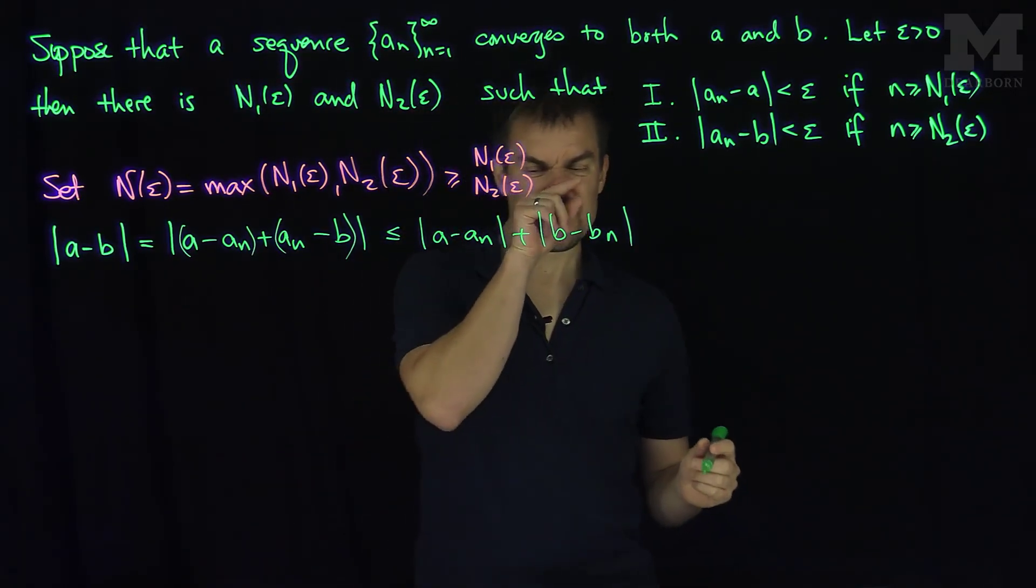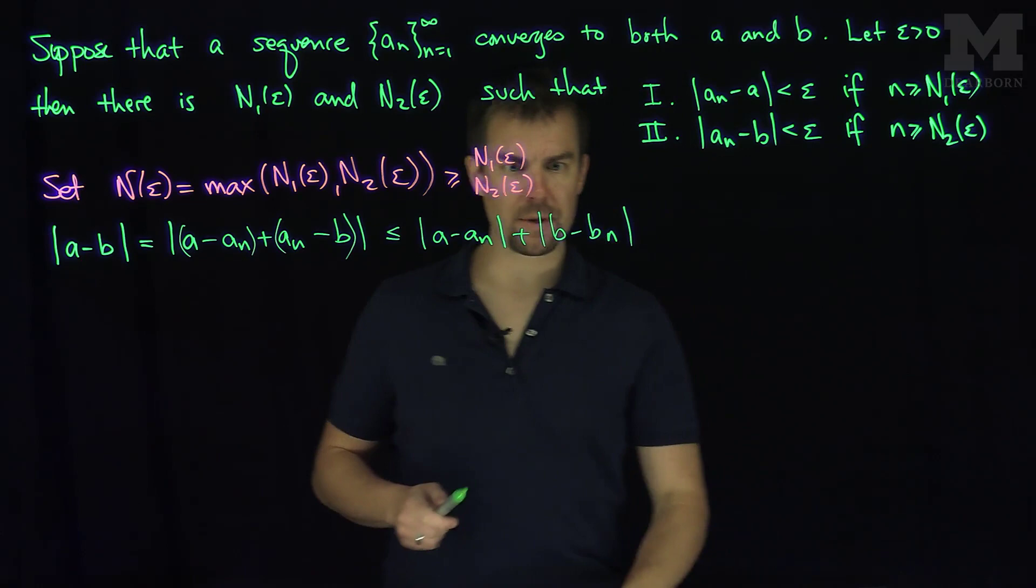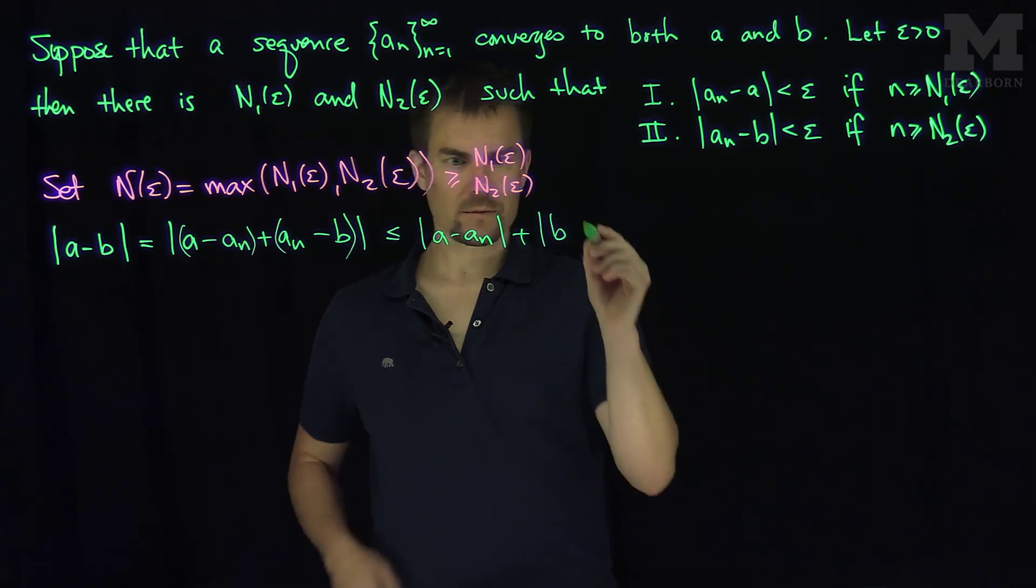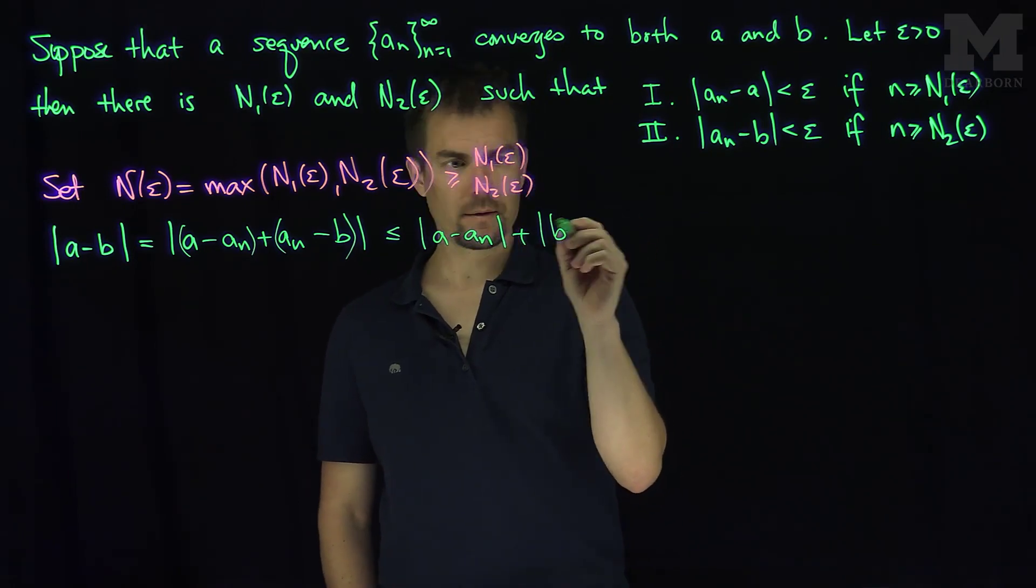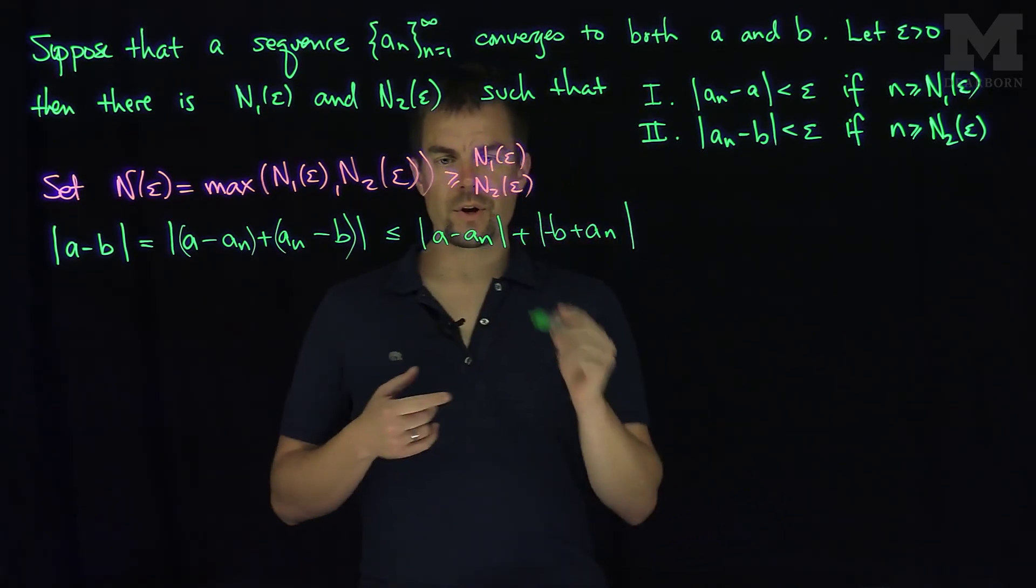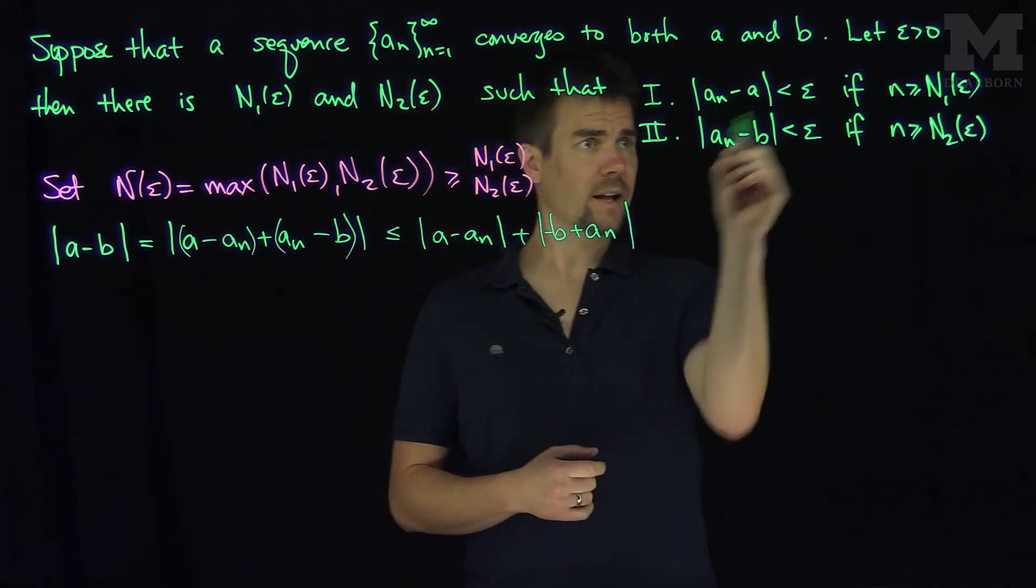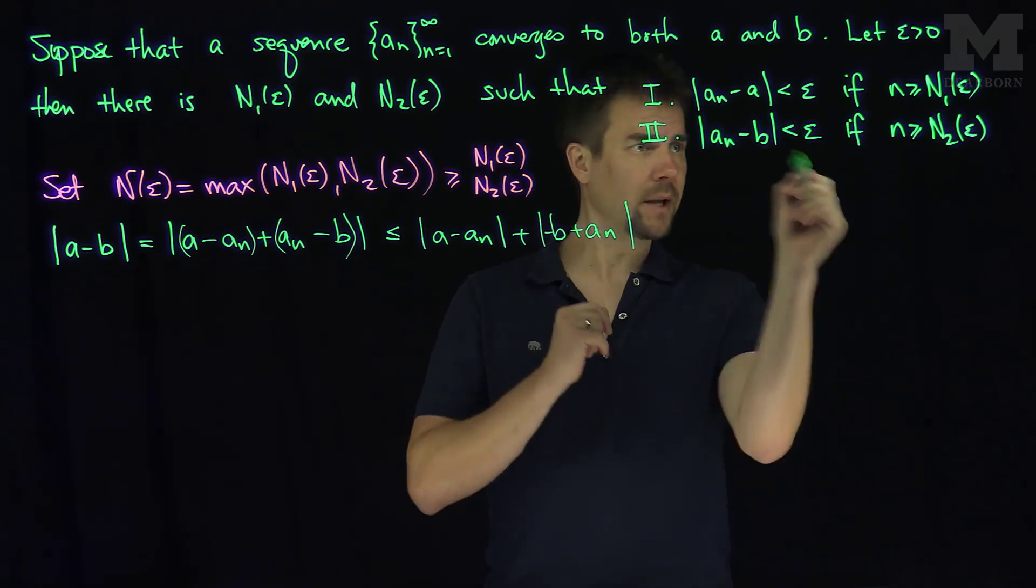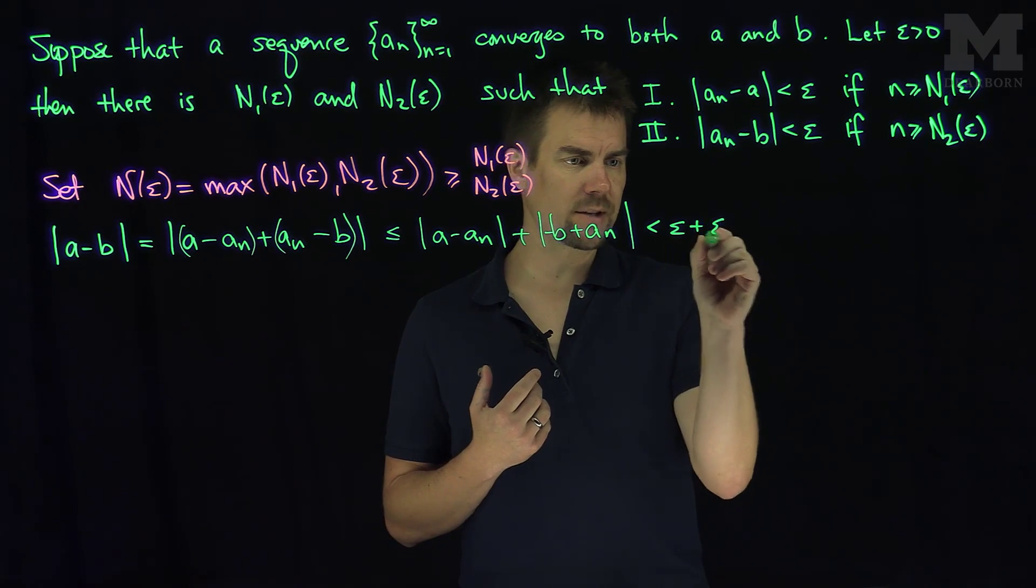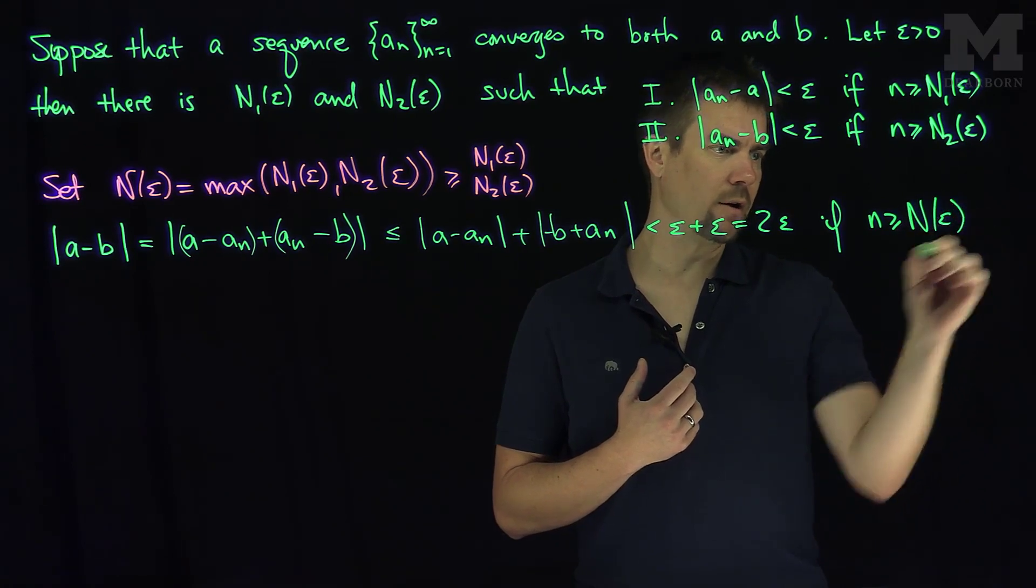Now, |a - a_n| is less than epsilon if we're bigger than N1, and |a_n - b| is less than epsilon if we're bigger than N2. So these expressions are less than epsilon plus epsilon, which is 2ε, if n is bigger than or equal to N(ε), which is the larger of those two.